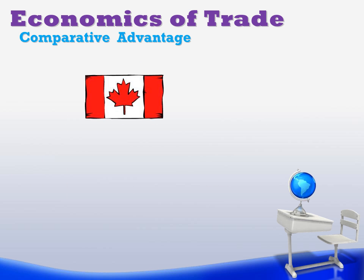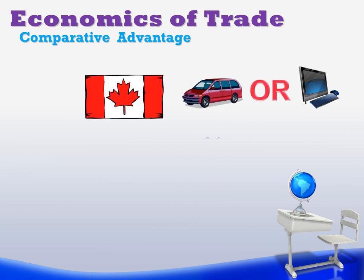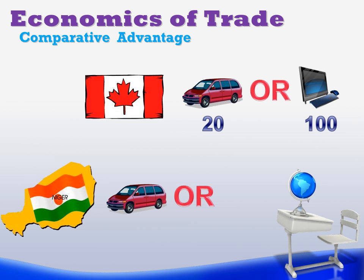Let's take a look with two countries. Canada — same statistics: they can produce 20 automobiles or 100 computers. But now instead of a developed country like Japan, we have Niger. And Niger can only produce 5 automobiles or 40 computers in a year. From looking at this, it looks like Canada has an advantage in both goods. So why should they ever trade with Niger, who can produce far less? Well, again, it comes down to comparative advantage and opportunity costs.